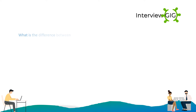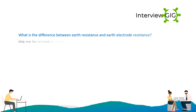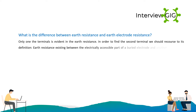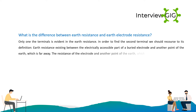What is the difference between Earth Resistance and Earth Electrode Resistance? Only one terminal is evident in Earth Resistance. In order to find the second terminal we should refer to its definition: Earth Resistance exists between the electrically accessible part of a buried electrode and another point of the Earth which is far away.